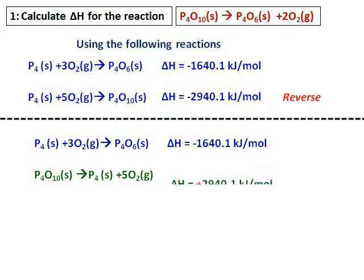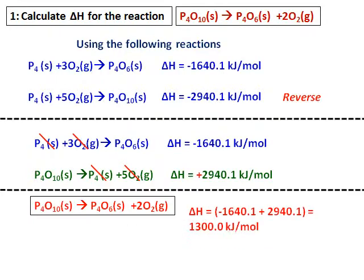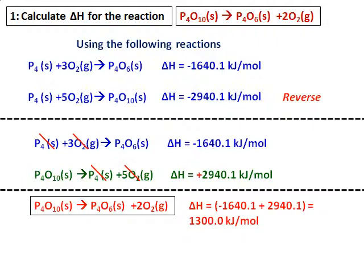Looking at the two equations carefully, P4 solid on the reactant side and P4 solid on the product side cancel out. Then, 3 oxygen on the reactant side of equation 1 and 5 oxygen on the product side of equation 2 also cancel, leaving 2 oxygens on the product side. Adding the two equations gives P4O10 solid → P4O6 solid + 2O2. Since we added the equations, we also add the delta H values. Note that when equation 2 is reversed, its delta H changes from −2940.1 to +2940.1. Whatever you do to the equation, you must do to the delta H value as well.